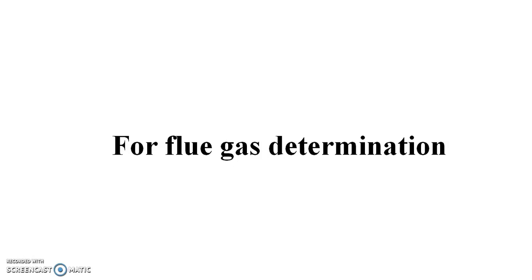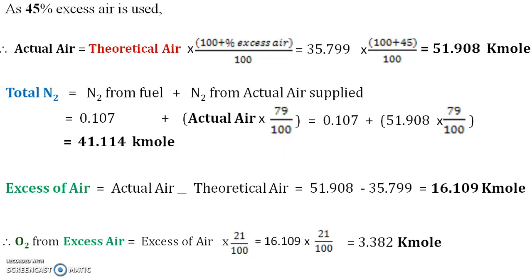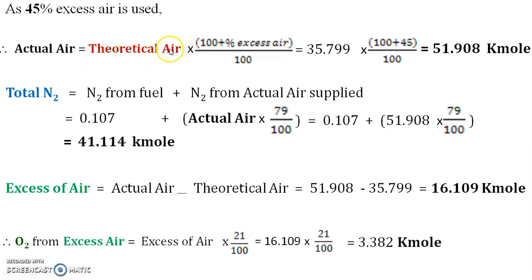Whatever product gases are obtained, we have to do the calculations for them. Before that, we have to consider the excess air which is supplied. Here in this problem, 45% excess air is supplied, so we have to find out the actual air supplied for combustion. In the first part of the numerical, we calculated the theoretical air required, and here we have to find the actual air using that theoretical air.